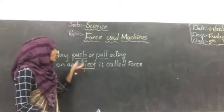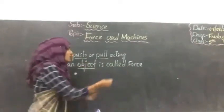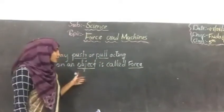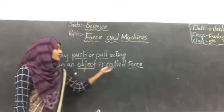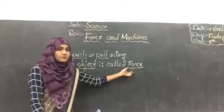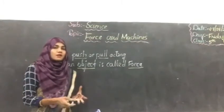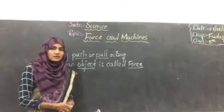Any push or pull acting on an object is called force. That means object and force are related to one another. Isn't it? So without an object, we can't apply force. So if I want to show my force, I can show by taking any of those objects, right?